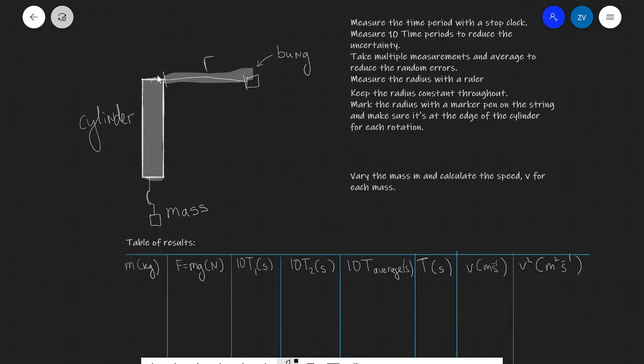The first thing that we're going to do would be to measure the time period with a stop clock. Because this in practice is actually really hard because the time period is really small and the human reaction time is about two tenths of a second on average.